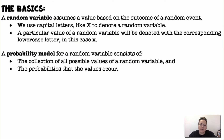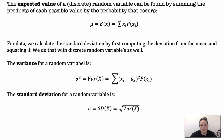The basics: a random variable assumes a value based on the outcome of a random event. We use capital letters to denote random variables, and lowercase letters when finding probabilities of a specific value. A probability model for a random variable consists of the collection of all possible values of that random variable and the probability that each value occurs.